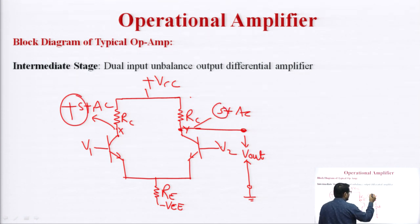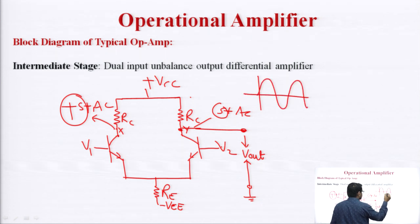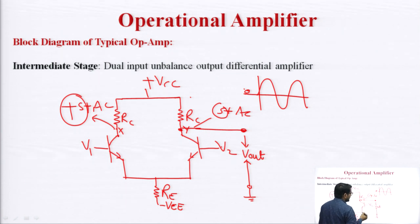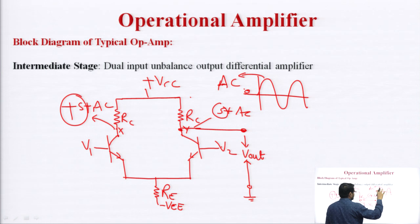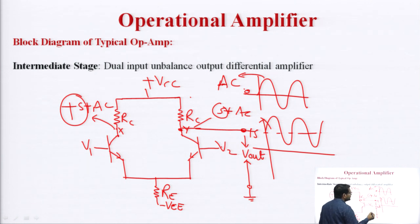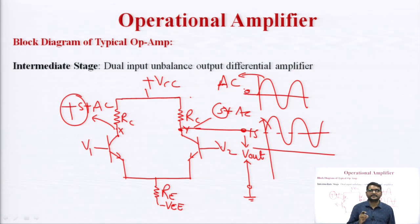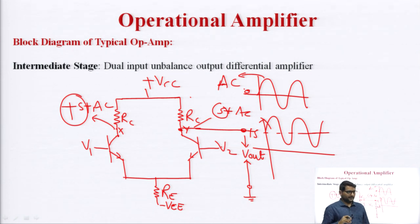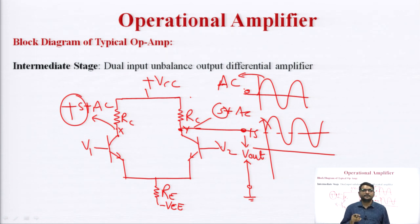If the input is a pure AC signal with zero mean — such as A·sin(ωt) — and the intermediate stage inserts a DC level of 5V, then the output appears as 5 + A·sin(ωt). The mean of the signal shifts to 5 volts. The purpose of the intermediate stage is amplification, but it inserts a DC level into the AC signal. The next stage — the level shifter — minimizes this DC from 5 volts to 0 volts.